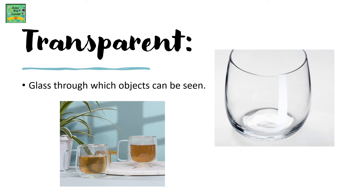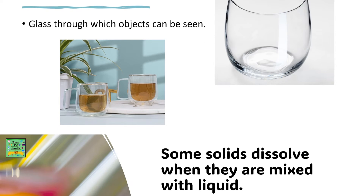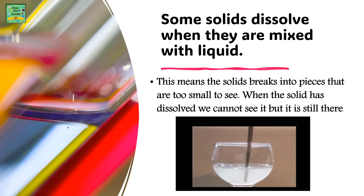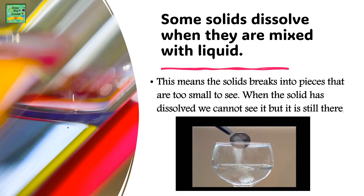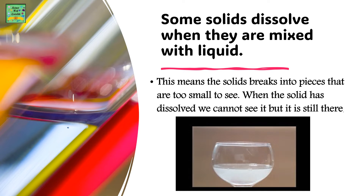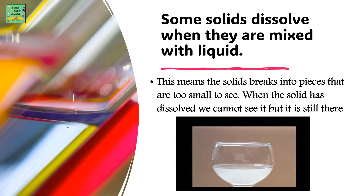Glass through which objects can be seen. Some solids dissolve when they are mixed with liquid. This means the solids break into pieces that are too small to see. When the solid has dissolved, we cannot see it but it is still there.